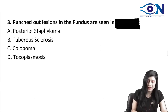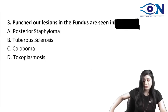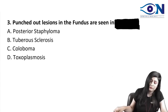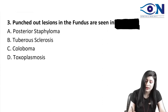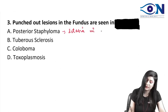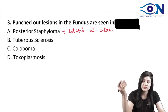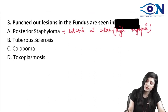Option one is posterior staphyloma. Posterior staphyloma will definitely not give you punched out lesions. Posterior staphyloma is actually an ectasia in the sclera, giving a protruded, bunch-of-grapes appearance. This is seen in cases of high myopia, so it is not a punched out lesion.